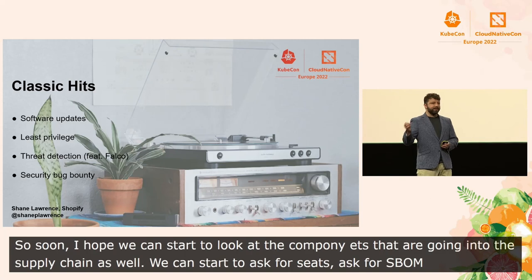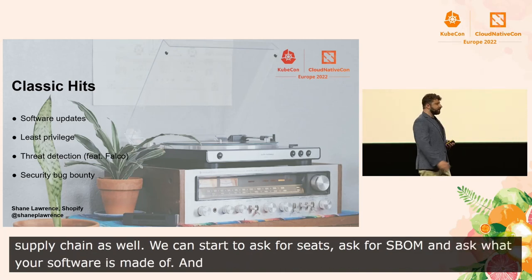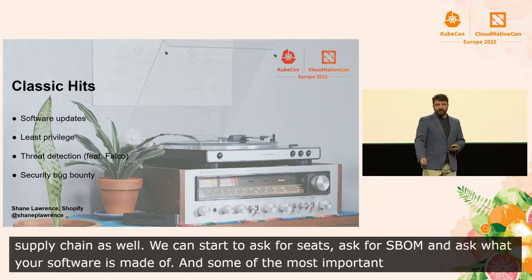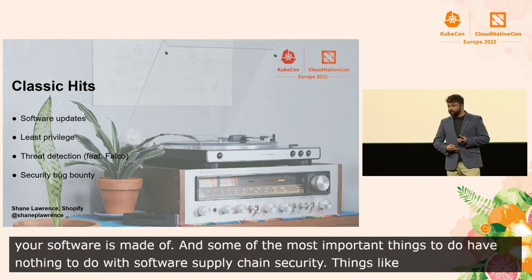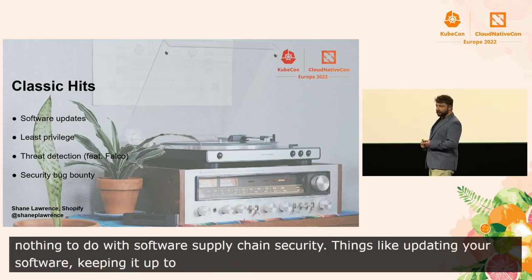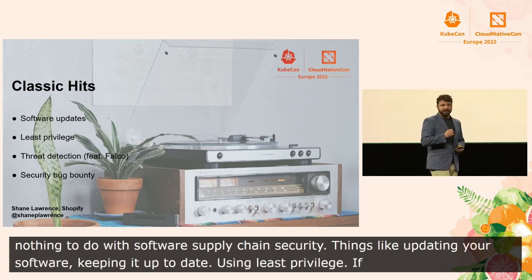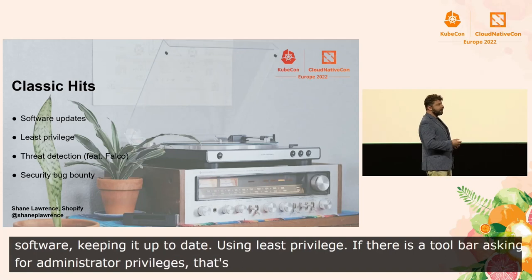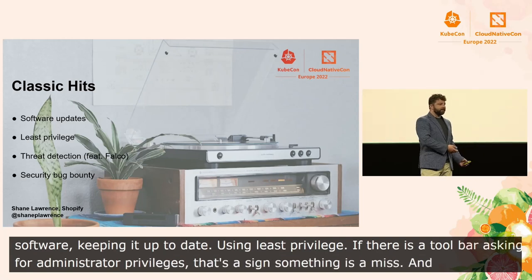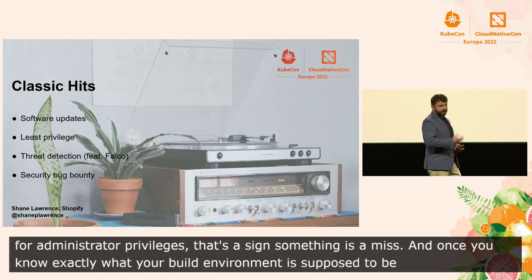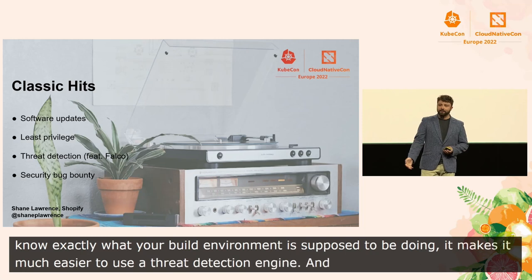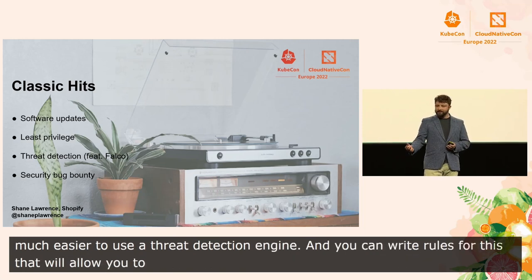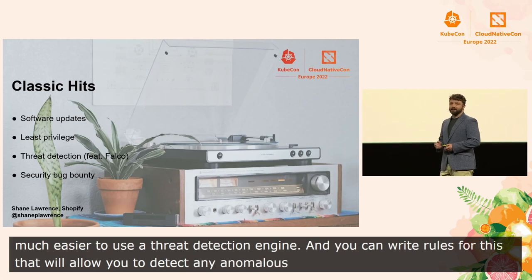Some of the most important things to do for securing your software supply chain have nothing to do with software supply chain security specifically. It's just things like updating your software, keeping it up to date, using least privilege. So if you see something that is massively overprivileged, or a toolbar that is asking for administrator privileges, that's probably a sign that something is amiss. And once you know exactly what your build environment is supposed to be doing, it makes it much easier to use a threat detection engine. We use Falco, and you can write rules for this that will allow you to detect any anomalous behavior. If your build system starts reaching out to third-party servers that it's never connected to before, that may be a sign that something is happening.